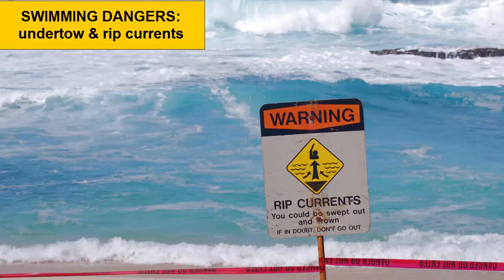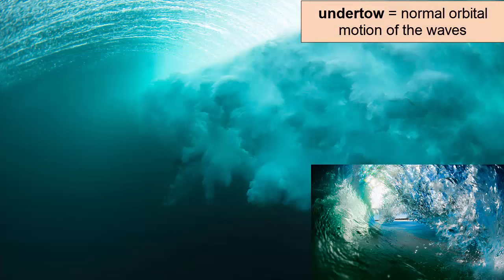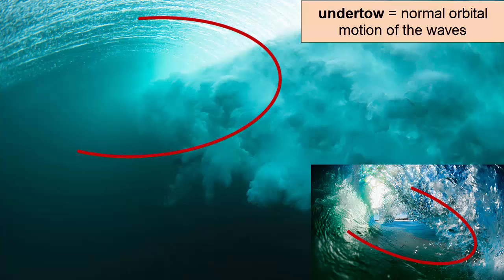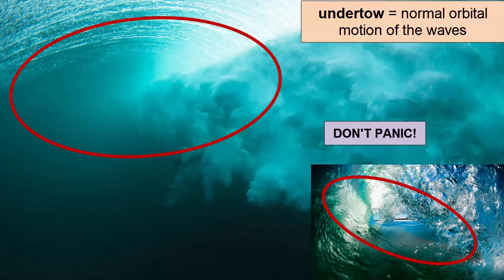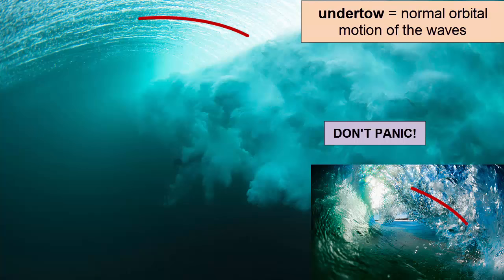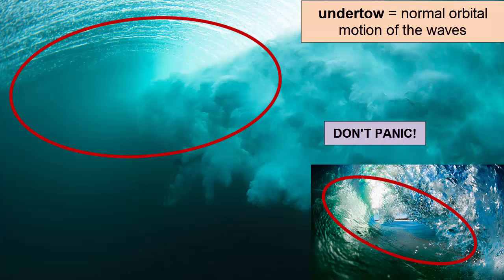There are two common dangers for ocean swimmers: undertow and rip currents. Undertow is simply the orbital motion of the breaking waves. Just like sand, rocks, and floating toys, swimmers caught in a breaking wave will get pulled under and dragged along the bottom, becoming part of the orbital motion. As long as swimmers caught in an undertow do not panic and can hold on for a few seconds, they will pop back up again as the orbital motion returns them to the surface. They can then ride the next wave up onto the beach.